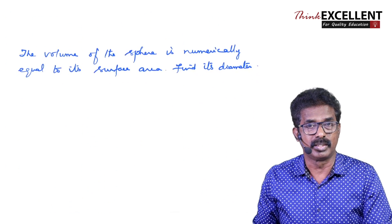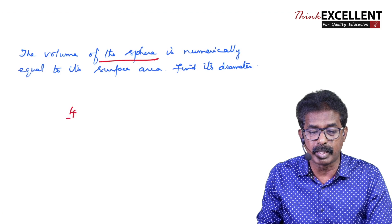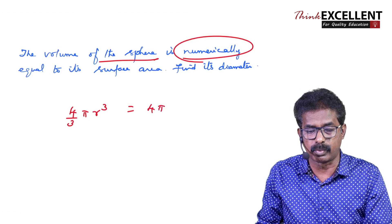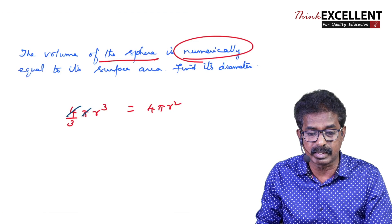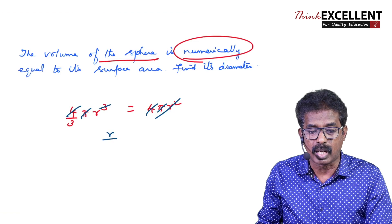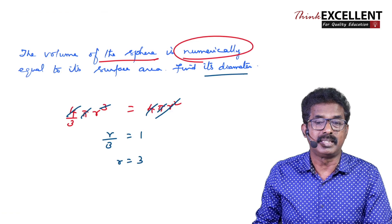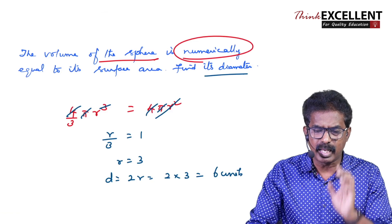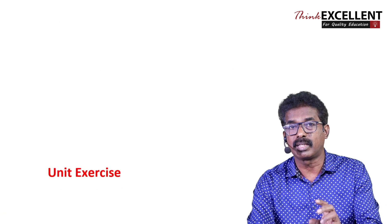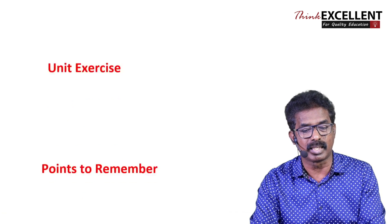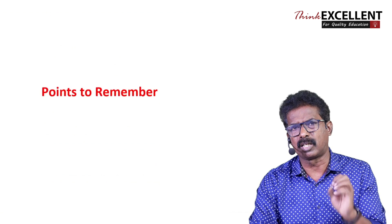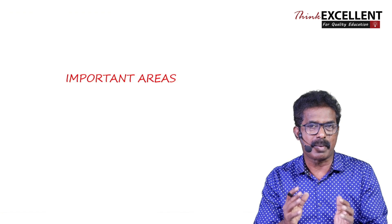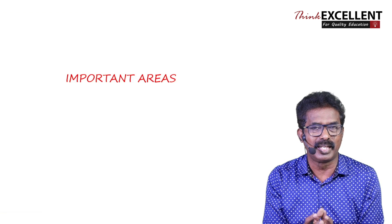One more example I am giving for inspiration. The volume of a sphere — formula: 4/3 × π × r³ — is numerically equal to its surface area 4πr². Solving: r/3 = 1, so r = 3. The question asks to find the diameter, so diameter = 2 × radius = 2 × 3 = 6 units. If you are able to understand any sum like this, you can do it. Also, concentrate on the unit exercises in the textbook.